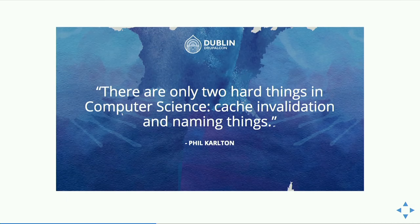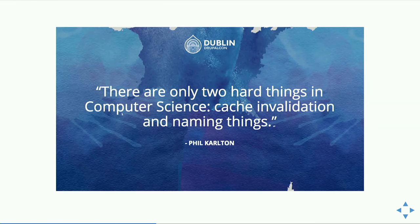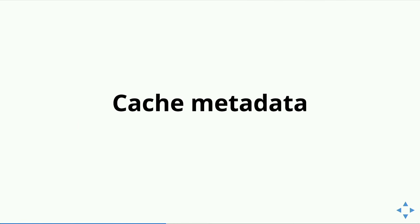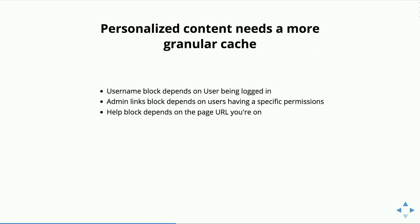There are two known hard things in computer science: cache invalidation, and naming things. Cache invalidation is not an easy task. Drupal 8 does it well using cache metadata — I'm pretty surprised, but it works. We have a theory start before the practice.